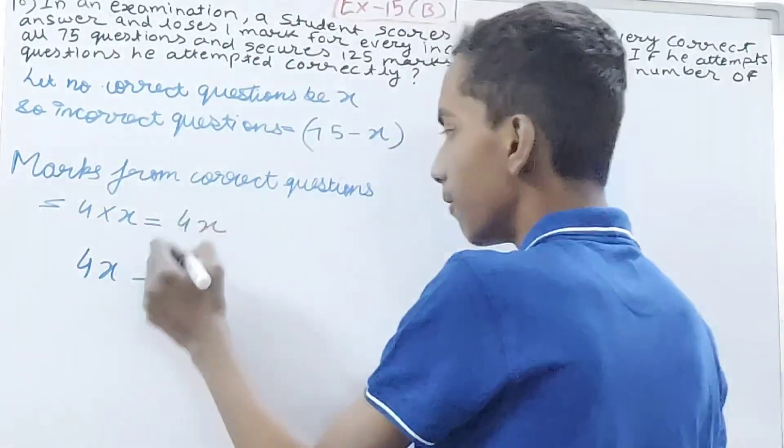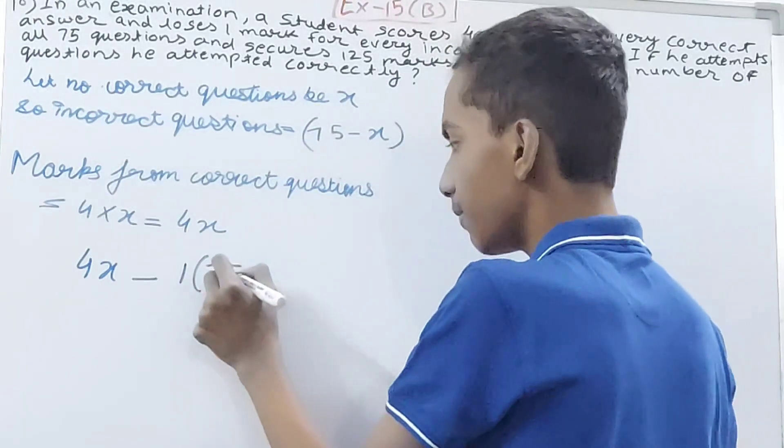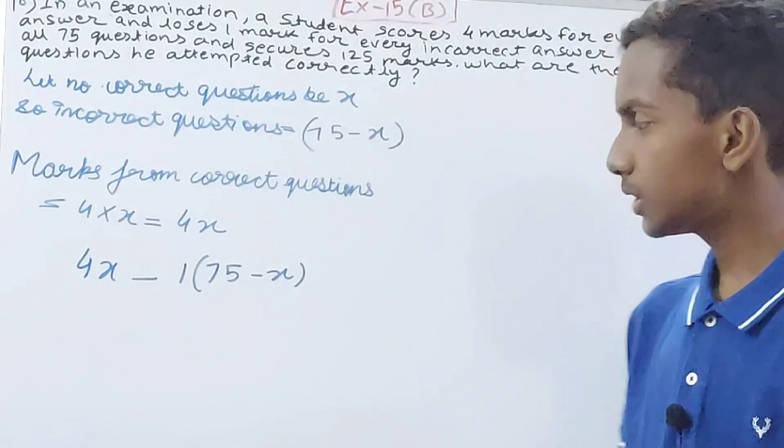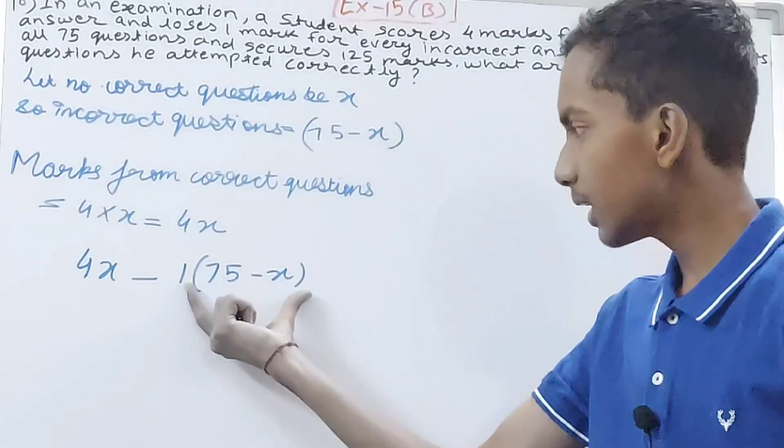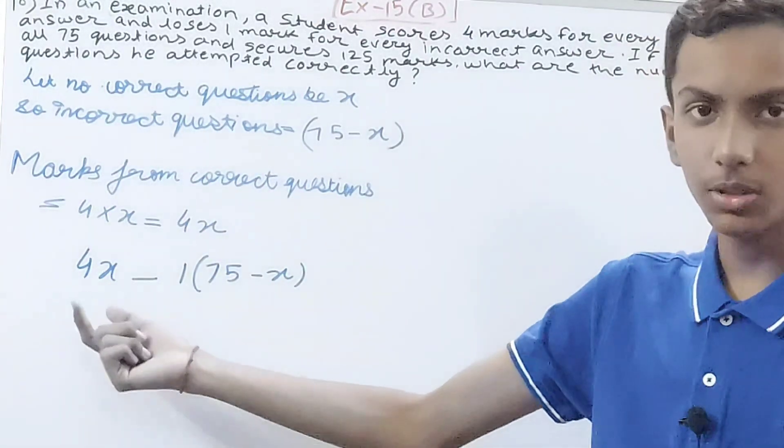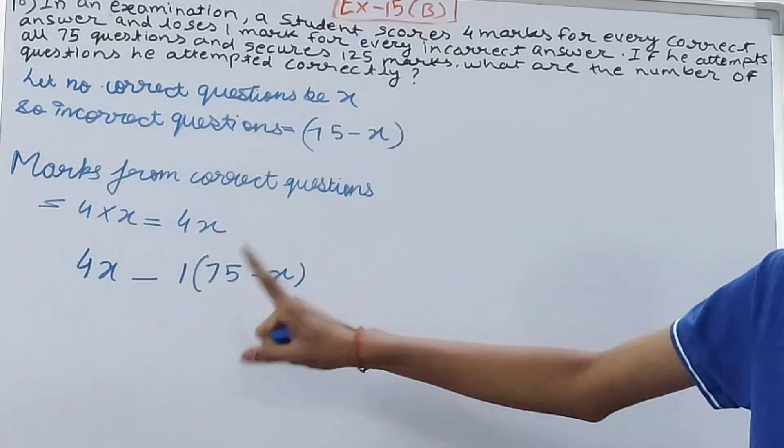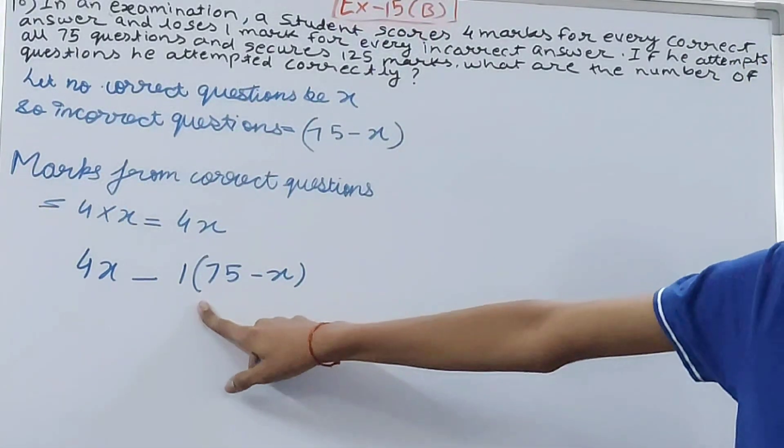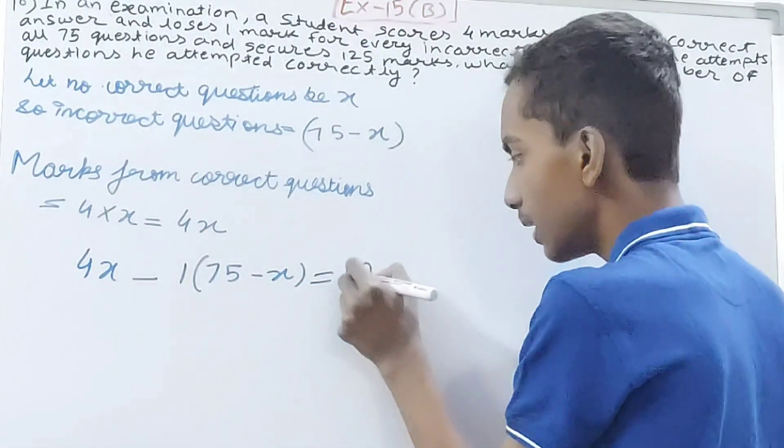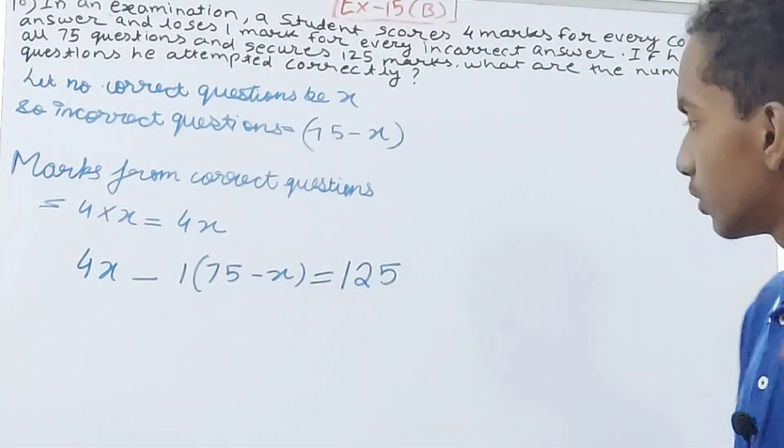And one mark for every incorrect question. So for 75 minus x incorrect questions, he will have 1 into (75 minus x). Try to understand this—this much mark is going to be subtracted from the correct questions. So minus, and then for every incorrect answer one mark, so multiply this by one. Now you will see the marks he is left with after this is 125. He secures 125 overall.